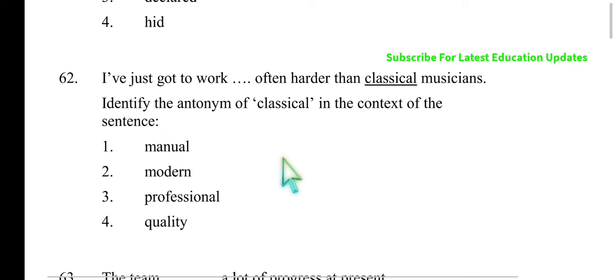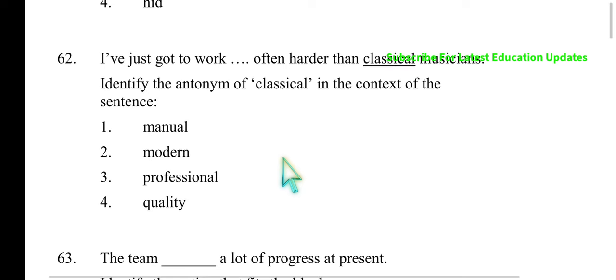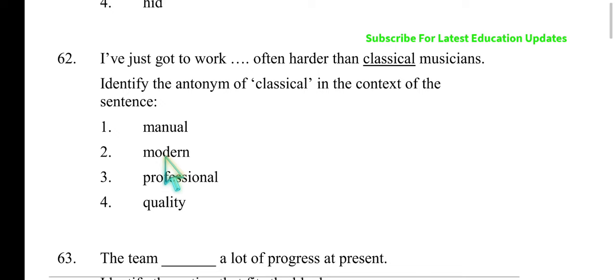So for the remaining TET sessions, be careful and focus on synonyms, antonyms, vocabulary, sentence-level implication, and meaning as discussion areas. The antonym of 'classical' is 'modern' — that is the right answer. Classical poets, classical writers, classical musicians — these are old, very traditional and classical. So the antonym here is 'modern,' not 'manual,' 'professional,' or 'quality.'